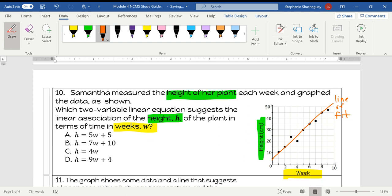So this is my line of fit. And I need to write an equation for my line of fit. So I'm going to use the points that fall on the line. So the value of this point is 5, 30 and the value of this point is 2, 15. So if I find the slope of this line, I'm going to do 30 minus 15 over 5 minus 2, which is going to be 15 divided by 3, which gives me a slope of 5.